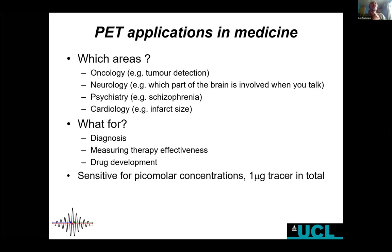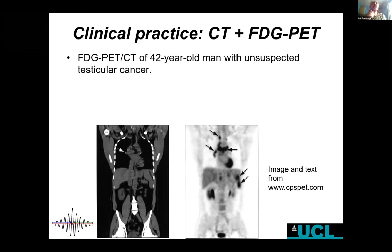PET is a very sensitive technique in the sense that you need to inject a radioactive labeled molecule or set of molecules, but you need very few of them to actually see it. Some of those molecules might be very toxic, but the amount injected is so small that it doesn't affect the body at all — which is why it's called a radio tracer in many applications. About 95 percent of PET scans in the clinic use FDG. On the left you see a CT whole body scan and on the right a PET scan with FDG, which is a glucose analogue.